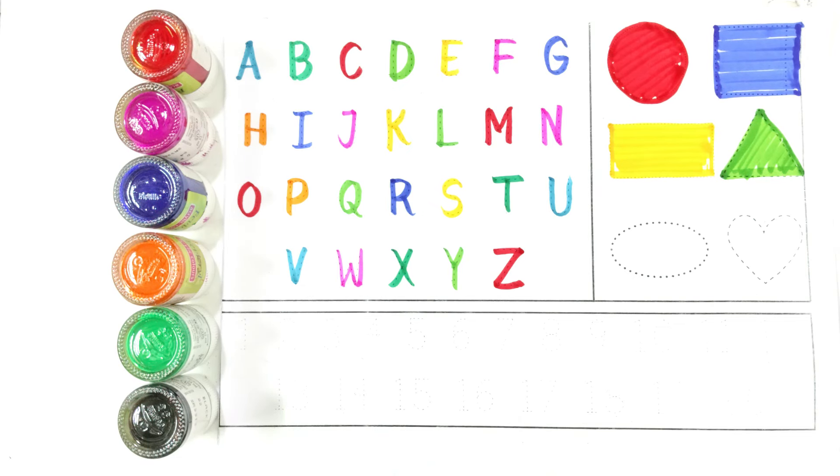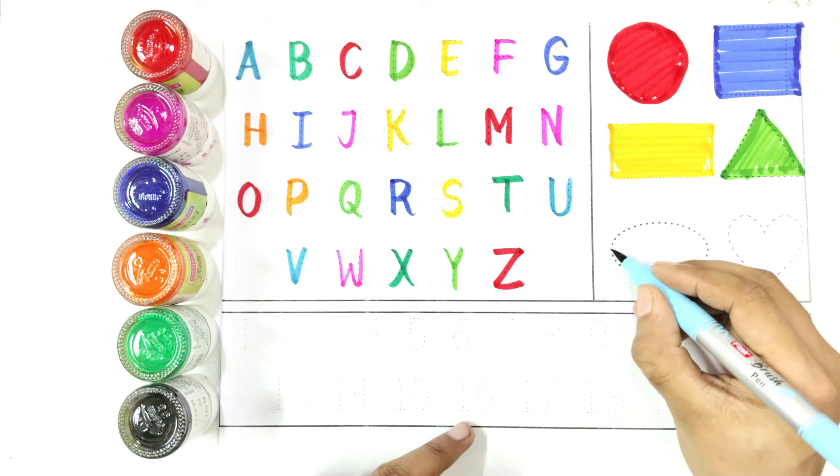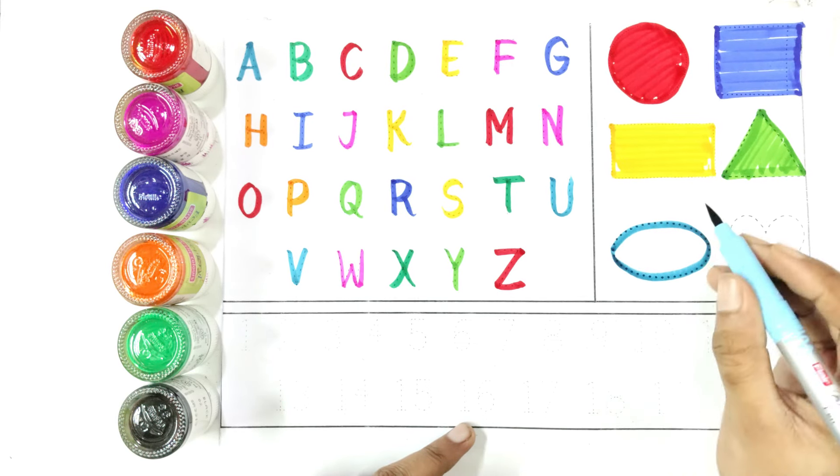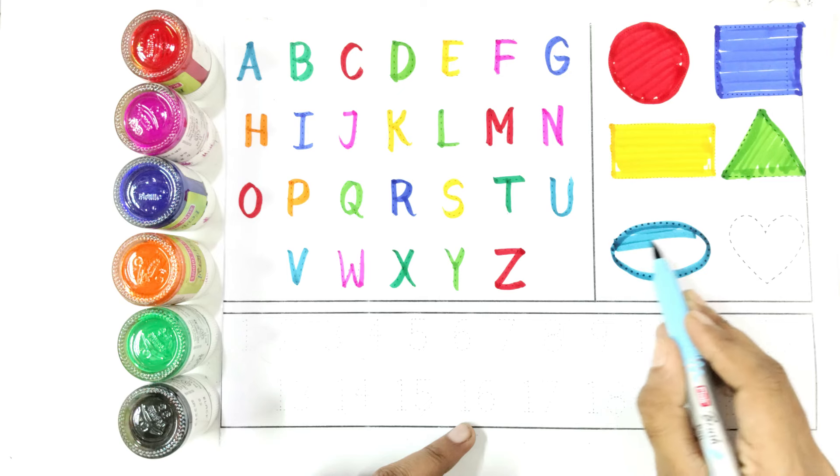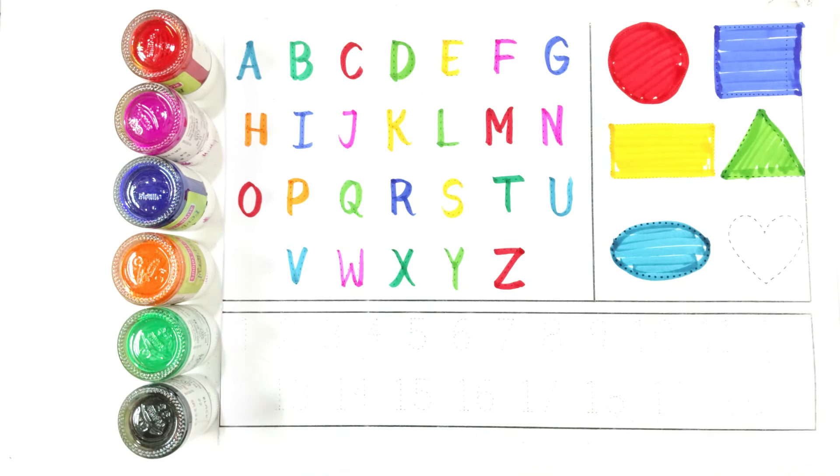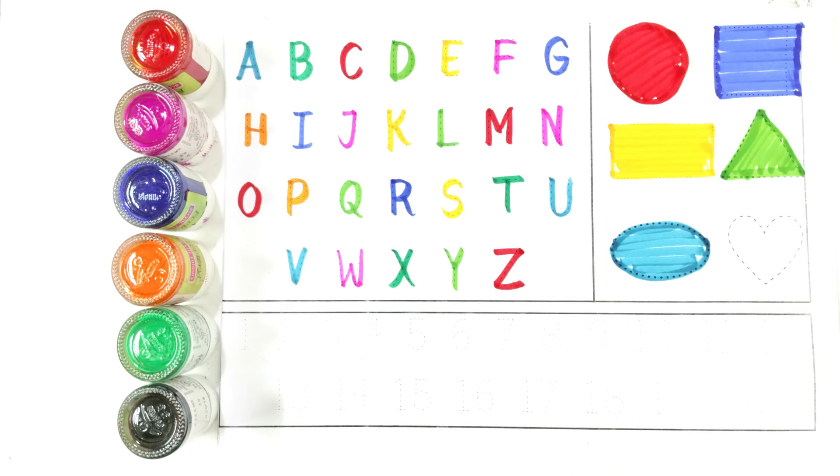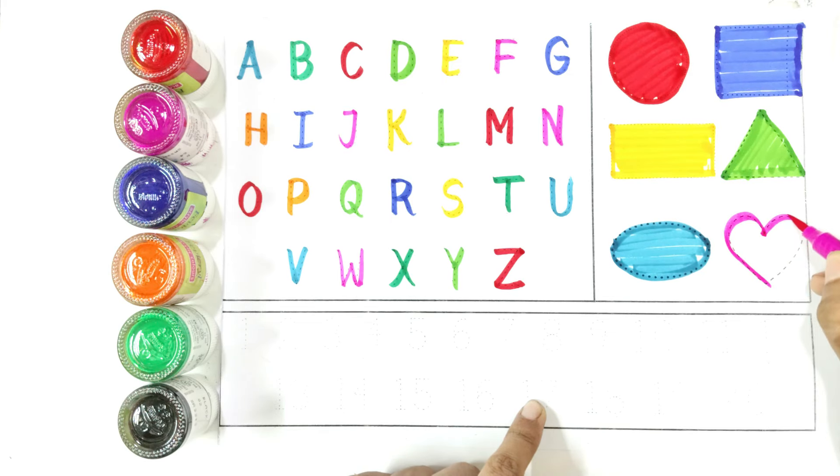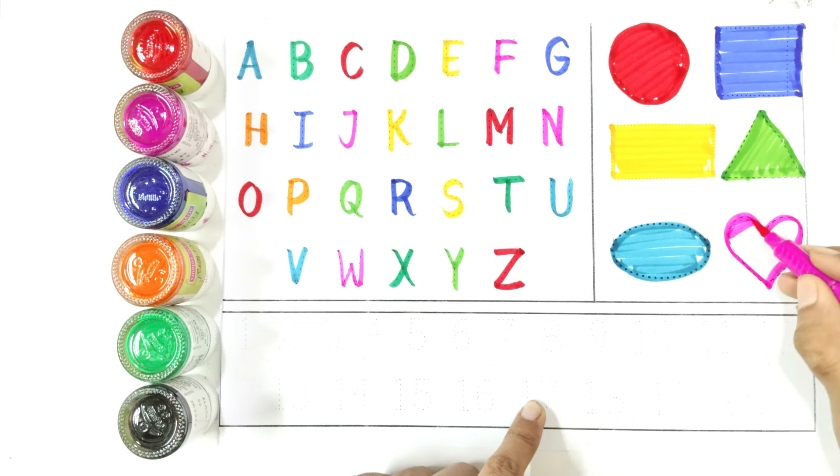Draw with me an oval. Again say with me oval. Draw with me a heart. Again say with me the name of shape heart.